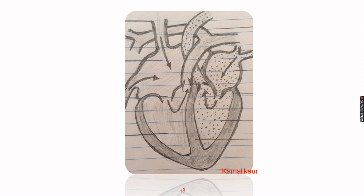We will now show the path followed by blood in the heart. From the vena cava it enters the right atrium — we show this with arrows — then from right atrium into the right ventricle and then to the pulmonary artery. On the left side, blood is brought by the pulmonary vein into the left atrium, then to the left ventricle, and from here to the aorta. This path of the blood is shown with arrows.